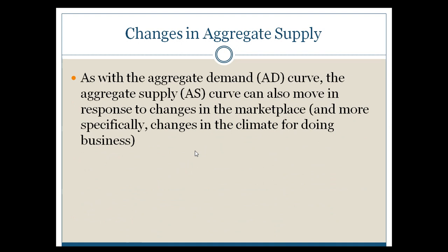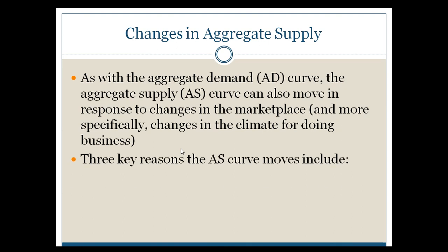You can also see your economy move if you see changes in the aggregate supply curve, so we're going to look at those next. It's worth noting that aggregate supply curves tend to be much slower and much more gradual. You're looking at changes in the capacity and ability of your economy to produce — that typically doesn't happen overnight. It tends to happen over a much longer time period. There are three major reasons we're going to look at for why aggregate supply curves may move.